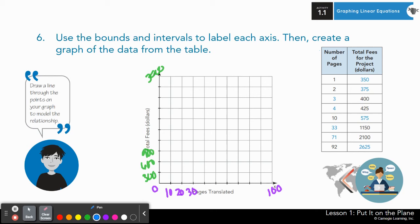On your own, you're going to fill in the rest of the intervals, but I'm going to graph one point to show you or to give you a starting point so that you can continue graphing on your own. So if Ms. Jackson translated one page, I'm going to find one on my X axis, which is somewhere in between zero and 10, but really close to zero. Then I'm going to find 350 on my Y axis, which is somewhere in between 300 and 600, but closer to 300. And I'm going to estimate that my point is somewhere here. And there we have our first point plotted.